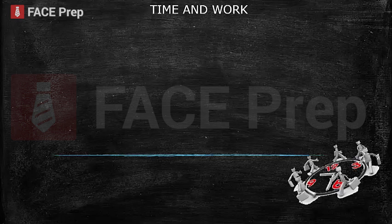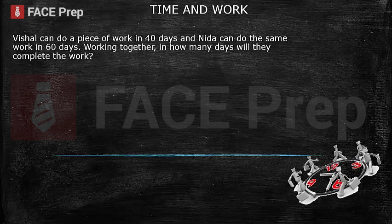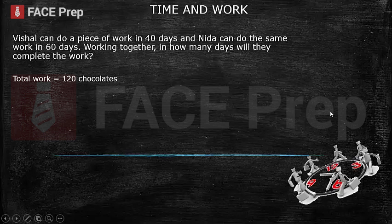Let's look at an example. Vishal can do a piece of work in 40 days and Nida can do the same work in 60 days. Working together, in how many days will they complete the work? To solve this by the chocolate method, we assume the total work is a total number of chocolates to be eaten, which is the LCM of the number of days. The LCM of 40 and 60 is 120, so total work is 120 chocolates.